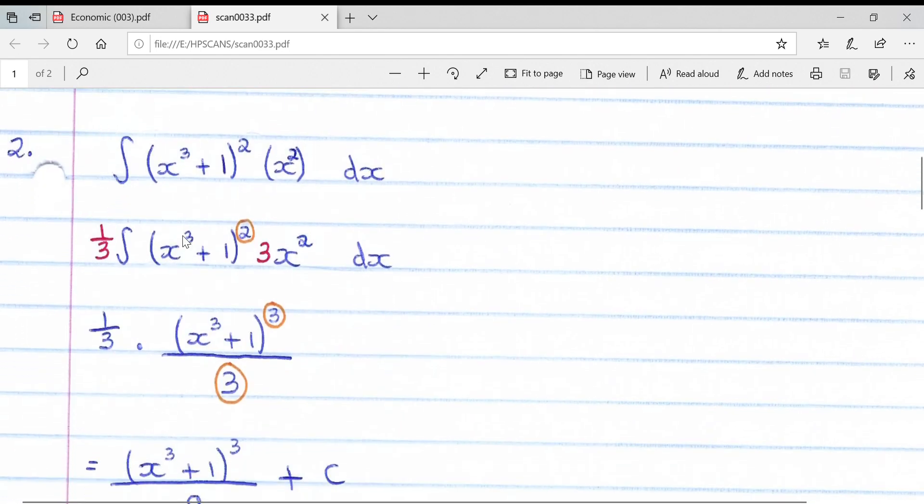Moving to our second example, slightly tougher although based on the same principles. We have our original bracket here to a power, and another bracket next to it. However, the bracket next to it is not the derivative of what's inside the bracket. The derivative of what's inside the bracket would be 3x squared, not 1x squared. So what we do is almost add in and then substitute outside. If we put a 3 onto this 3x squared, we'll have the derivative.